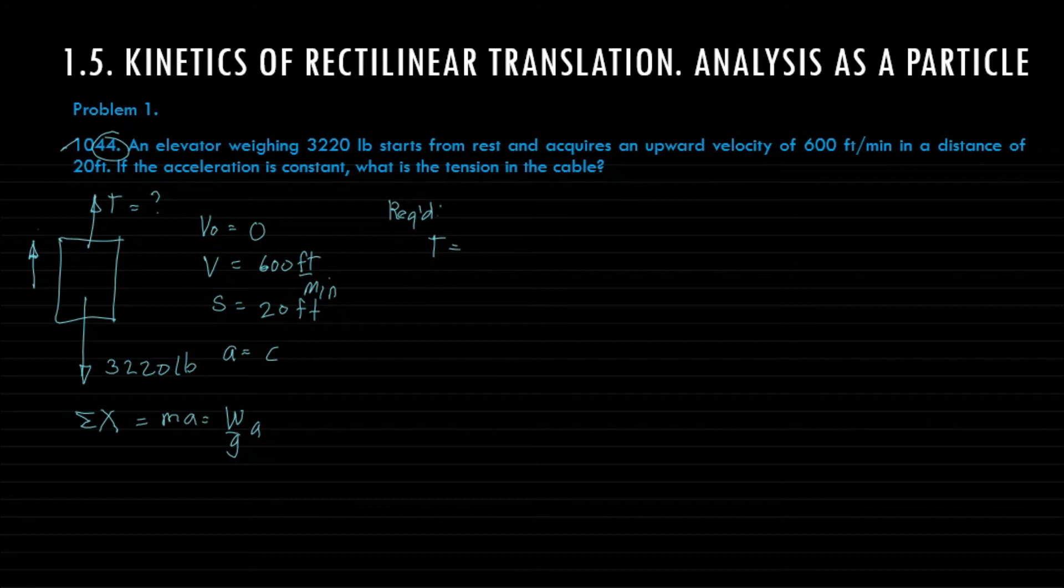So we have here force T, that is your positive force, then we have here the weight which is 3220 pounds. Since it's downward, opposite of T, therefore this is negative.